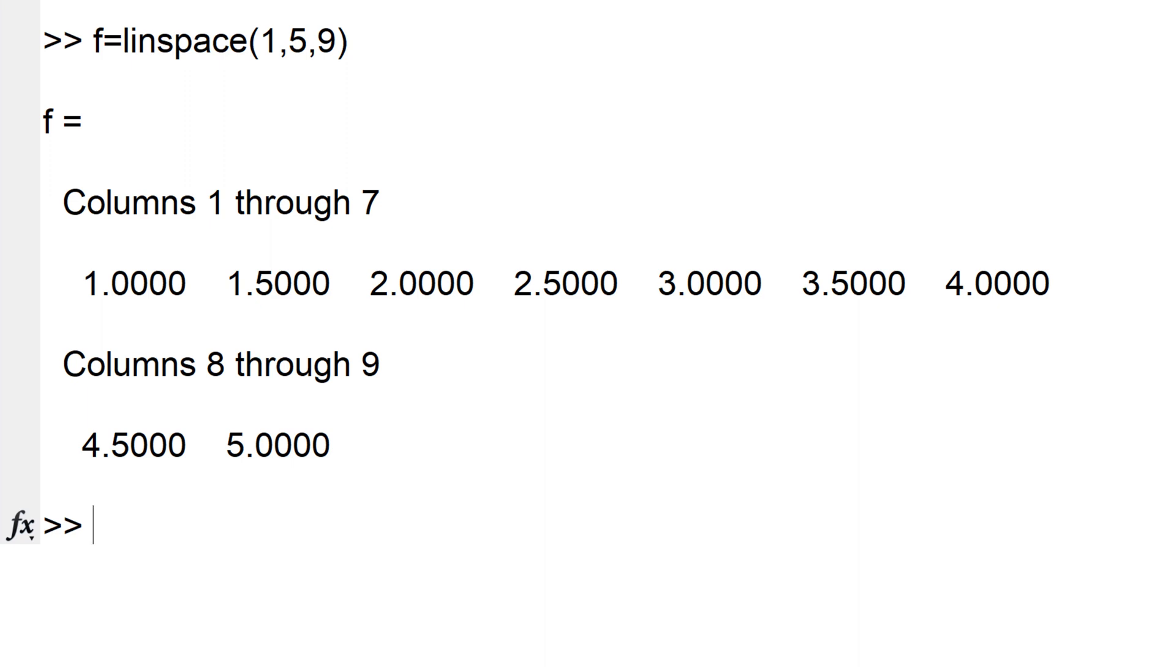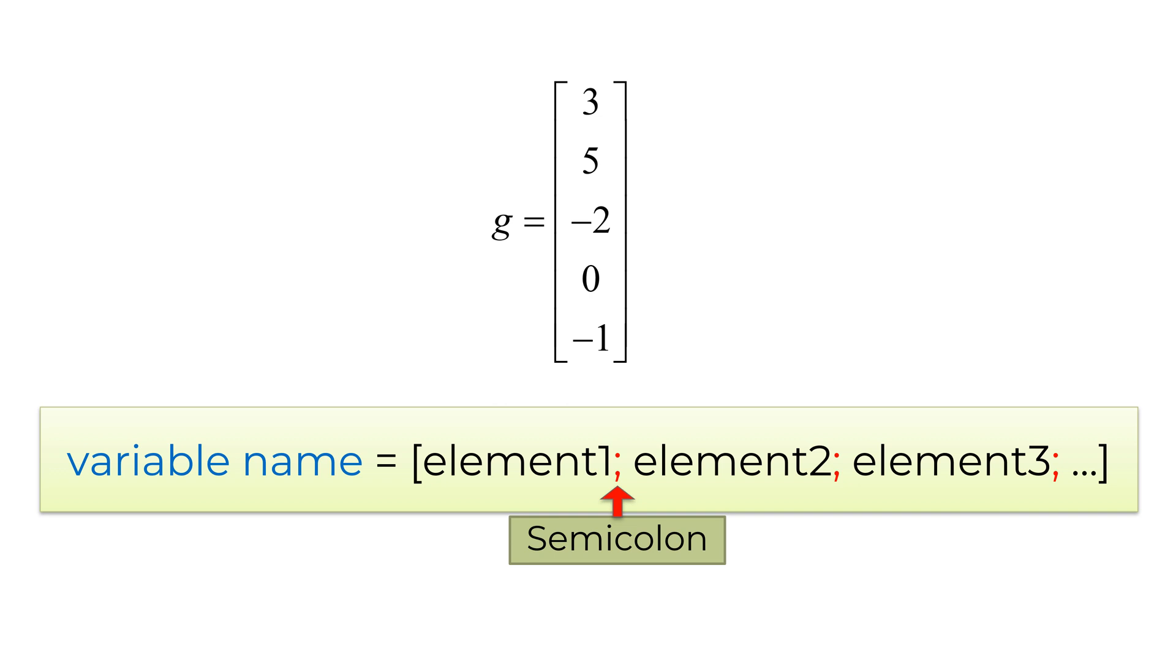A simple way to build a column vector is to use square brackets as you have done for the row vector. However, the difference is to use semicolon as a row separator between the elements. For example, I would like to build a 5 by 1 column vector G having element 3, 5, minus 2, 0, and minus 1. You can type G equal sign square bracket with the elements 3, 5, minus 2, 0, minus 1 to see given elements. If successful, you can see the elements in the vertical direction without square brackets.